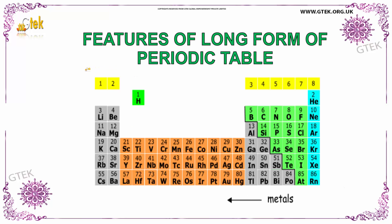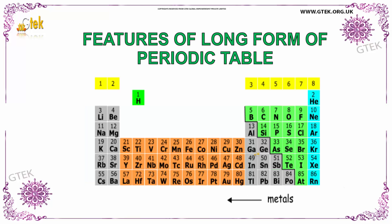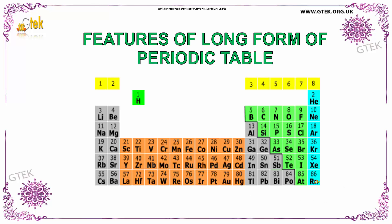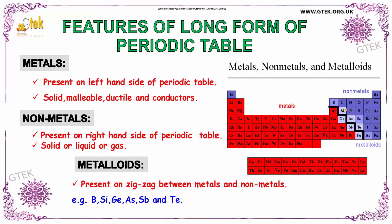Looking at the periodic table, you are able to identify certain elements as metals, whereas these other elements are considered as non-metals. To further classify, the periodic table shows metals in red color, non-metals in violet color, and the lighter colors represent metalloids.